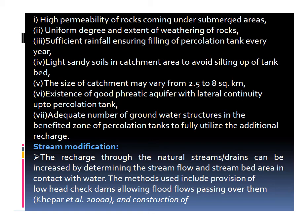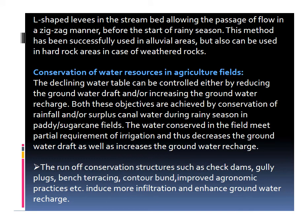The next structure is stream modification. Recharge to natural streams or drains can be increased by increasing the stream flow and stream bed area in contact with water. The methods used include provision of low-height check dams allowing flood flows to pass over them, and construction of L-shaped levees in the stream bed allowing passage of flow in a zigzag manner before the start of the rainy season. This method has been successfully used in alluvial areas but can also be used in hard rock areas.